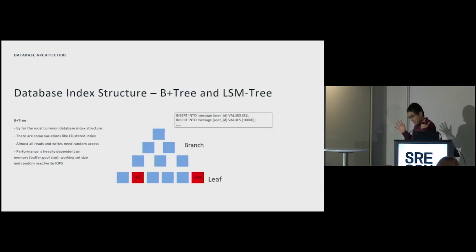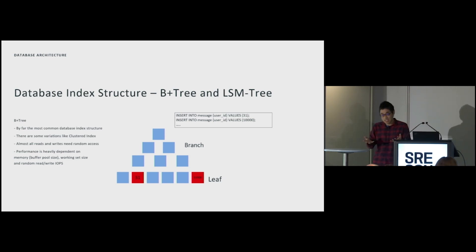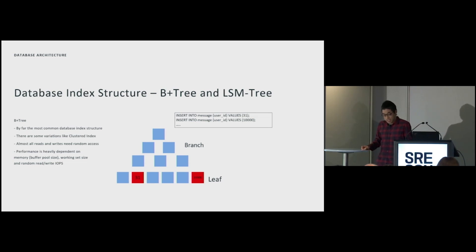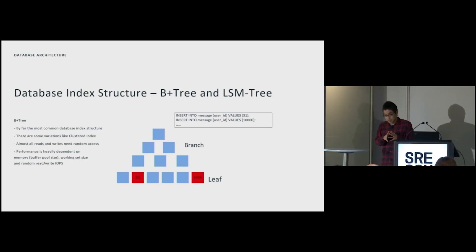Now for database internal data format structures. B-tree index structure is the most common — still by far the most popular architecture. But nowadays another structure called Log-Structured Merge tree, or LSM, is also getting popular. B-tree is a tree-based structure consisting of branches and leaves, with the leaf nodes at the bottom layer holding almost all data. There are several variations like clustered index, but almost all reads and writes require random access.